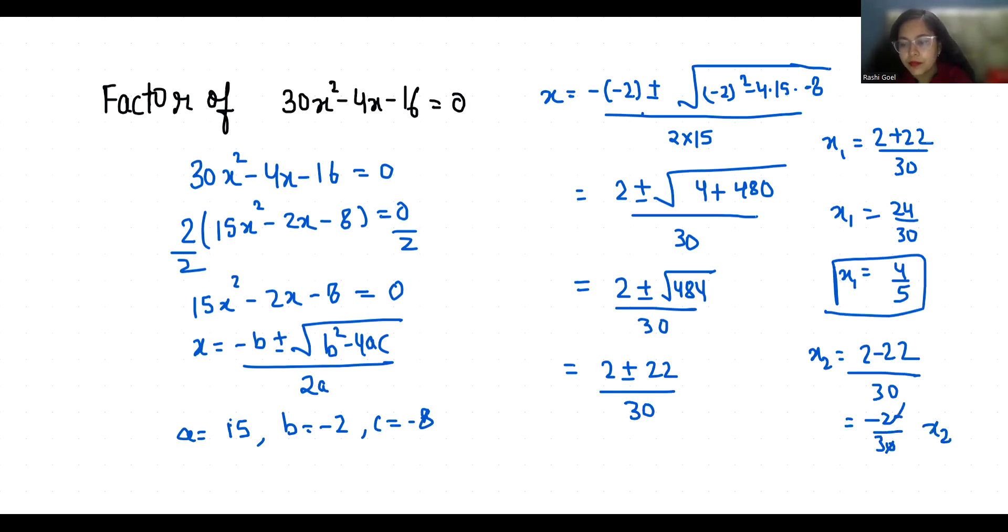Now for the factors. So x₁ = 4/5 and x₂ = -2/3. I'm going to multiply both sides by 5, so 5x = 4. Therefore 5x - 4 = 0, so the first factor is 5x - 4.